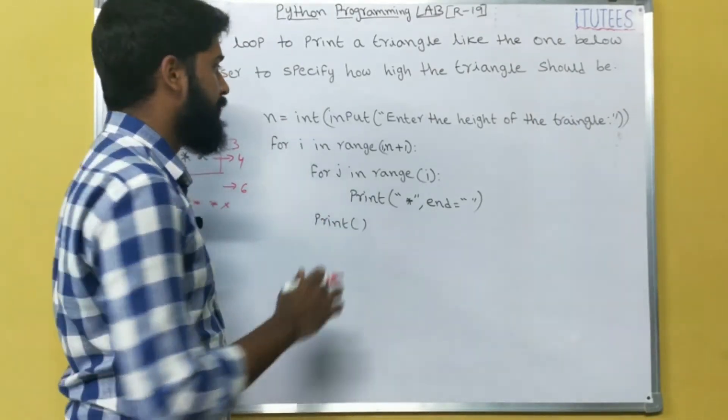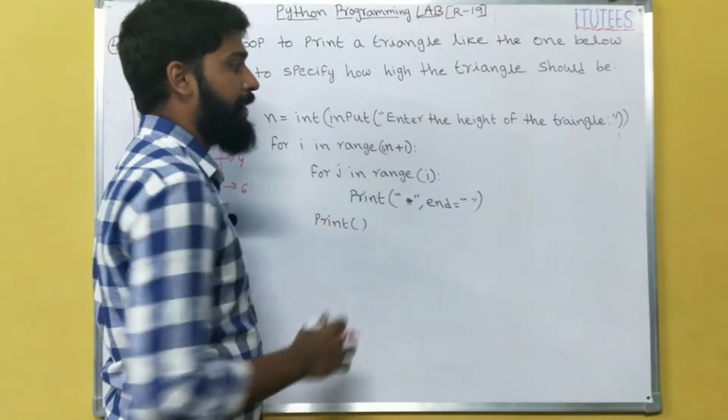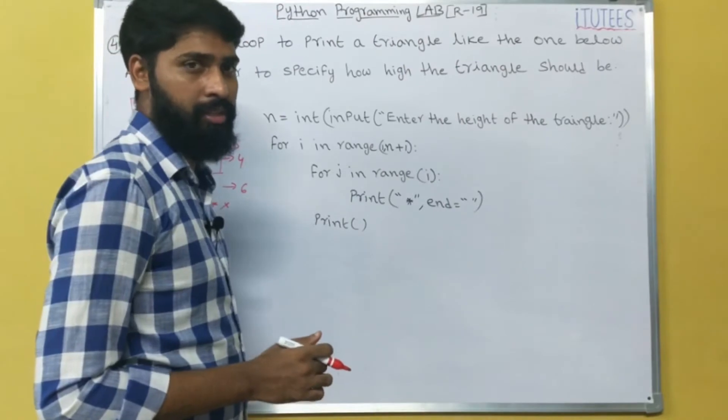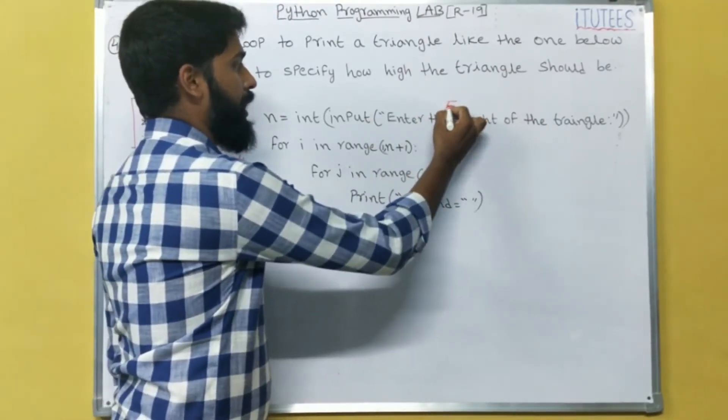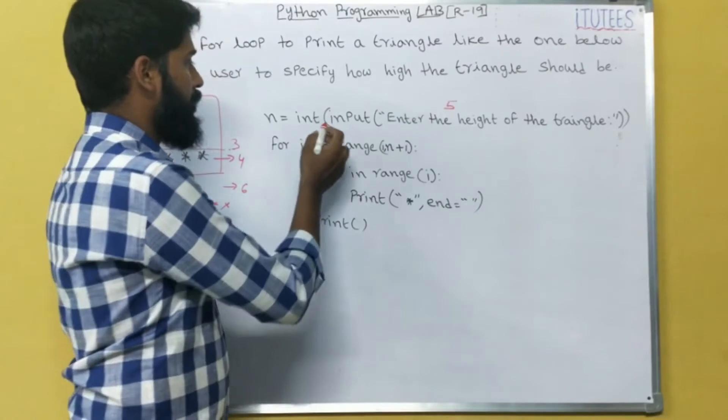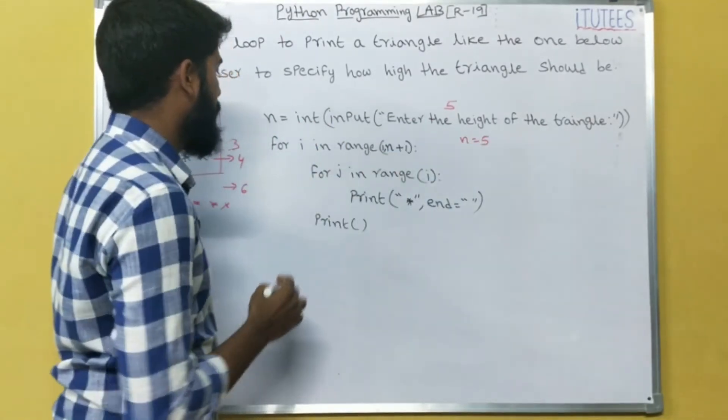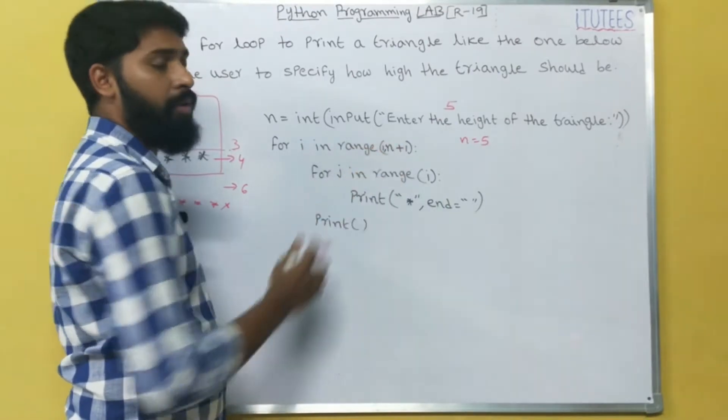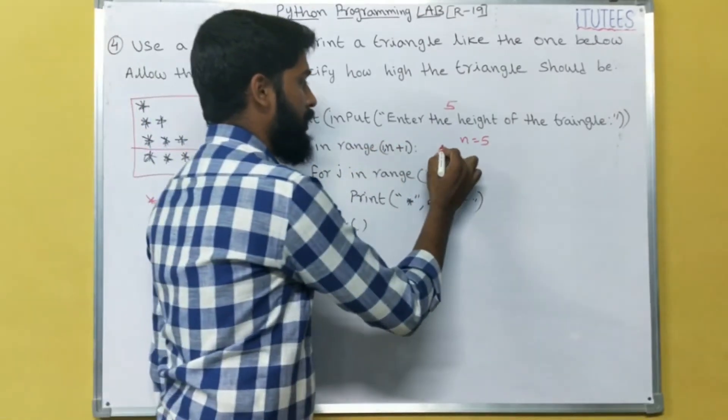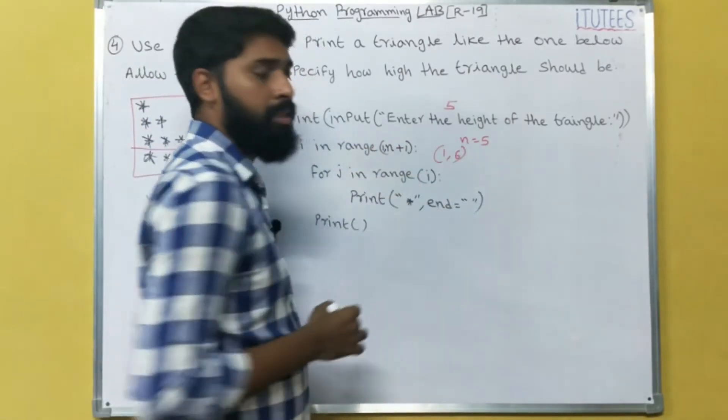n equals int input of enter the height of the triangle. So for example I entered 5 as the height, n equals to 5. For i in range of 1 to n plus 1, that means range of 1 comma 6.